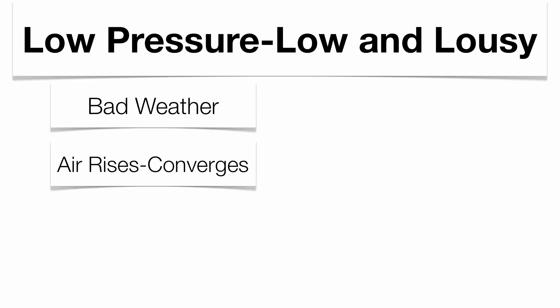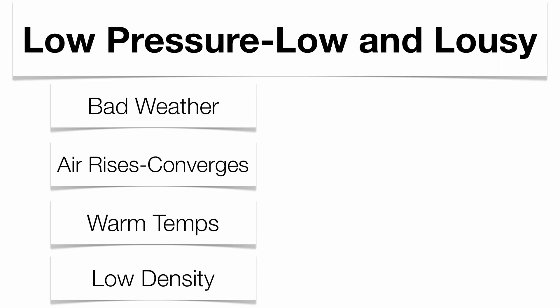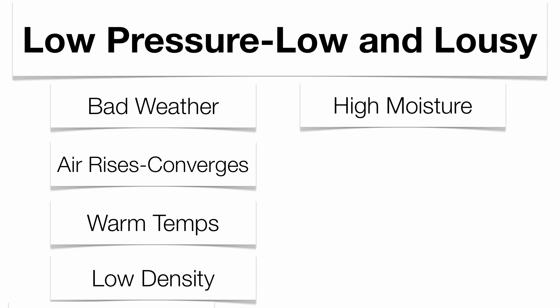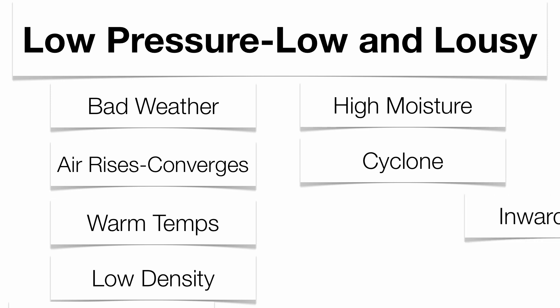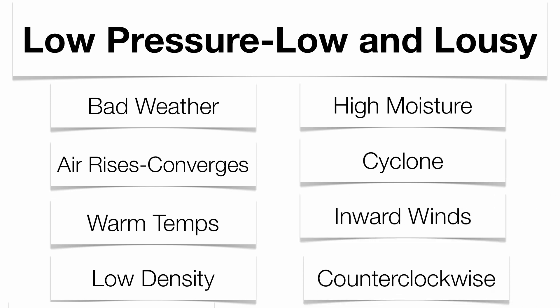Low pressure is the exact opposite — lousy weather, really bad weather. This is simply because air rises due to warmer temperatures. Warm air expands because it has a much lower density, causing that warm air mass to rise up. Warm air generally holds more moisture, so you tend to have a high moisture content, lots of clouds, and lots of condensation. These types of systems tend to be cyclonic in nature, which means winds blow inward and counterclockwise.